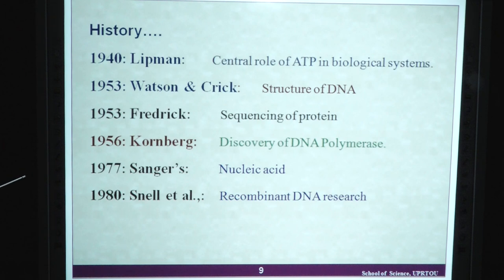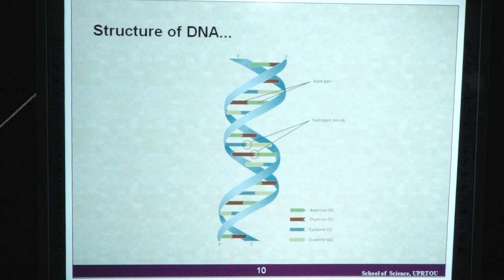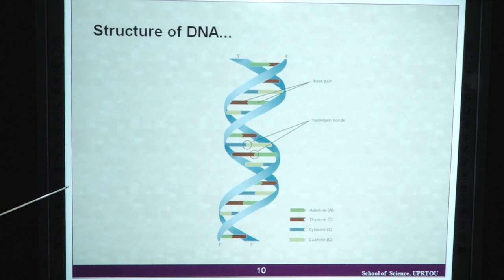In 1956, Kornberg discovered DNA polymerase. In 1977, Sanger proposed nucleic acid sequencing. In 1980, Snell et al. proposed recombinant DNA research or recombinant DNA technology. This is the simple structure of DNA having different nitrogenous bases: adenine, thymine, cytosine and guanine.